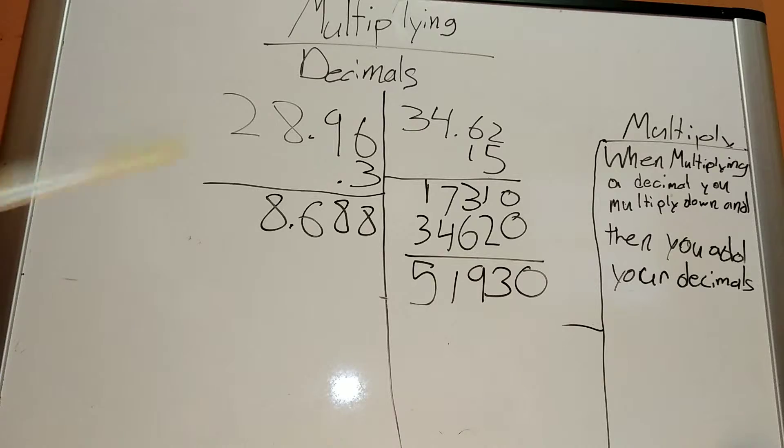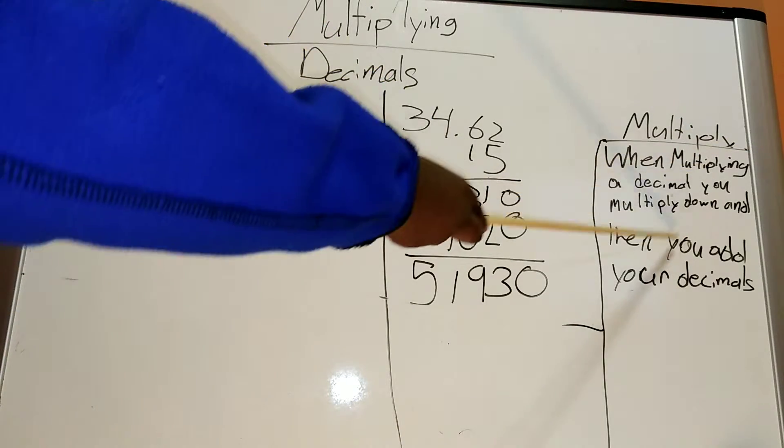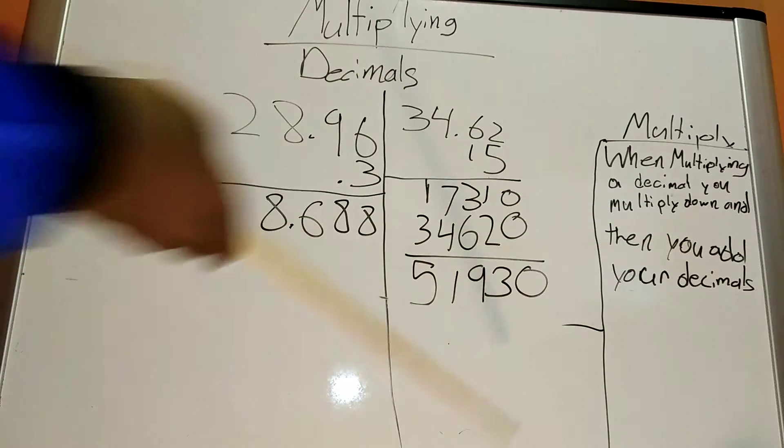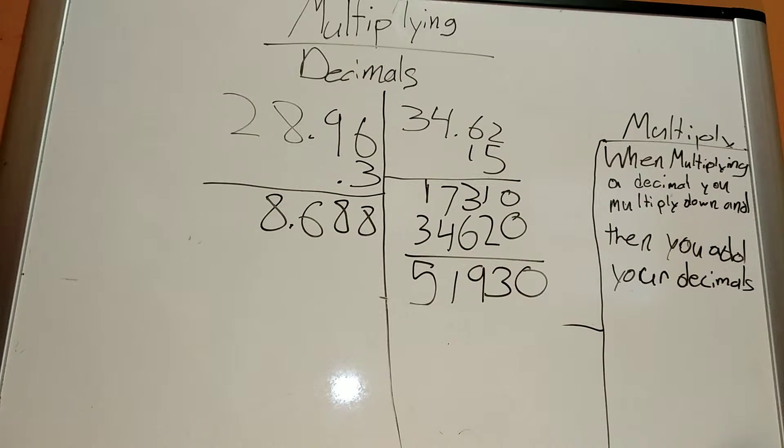Whenever you multiply a decimal, you multiply down like you would usually do, then add the decimals. What I mean by this, I already have two problems up there that I wanted to show you, but I'll also be redoing the work for them. So, I have this problem.